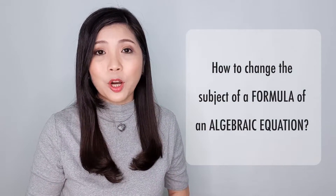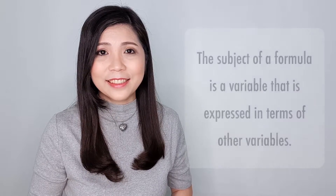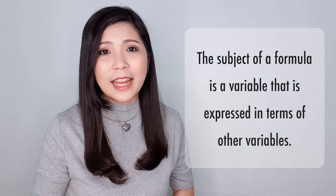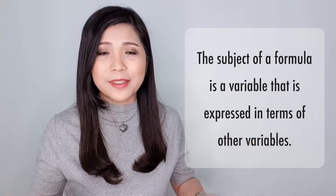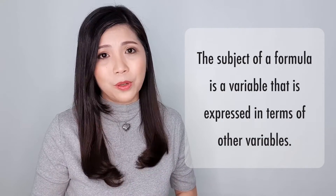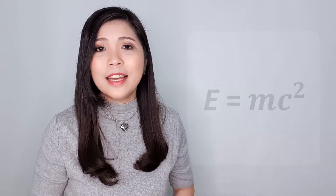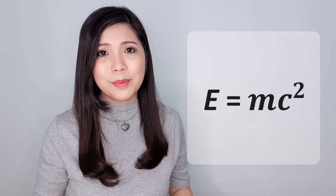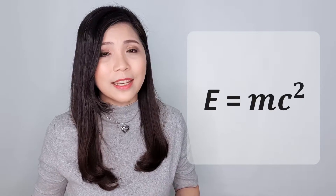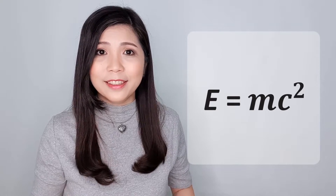How to change the subject of a formula of an algebraic equation? The subject of a formula is a variable that is expressed in terms of other variables, and the coefficient of the subject must be equal to 1. For example, e equals mc squared, whereby e is expressed in terms of m and c, and thus e is the subject of the formula.